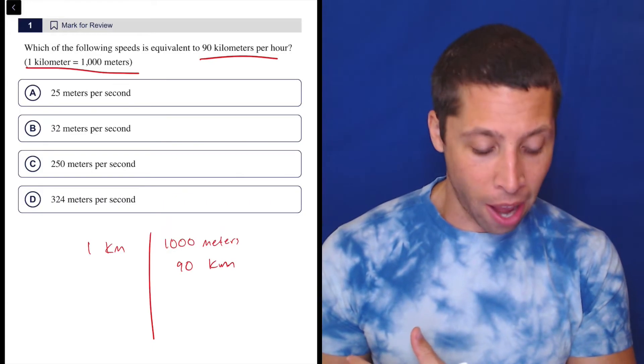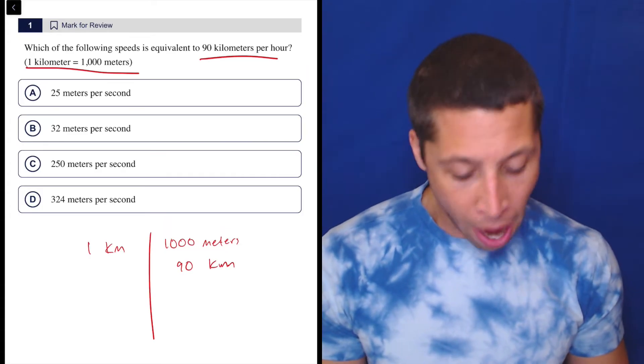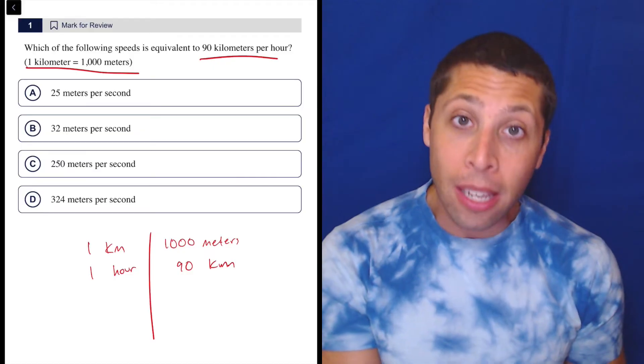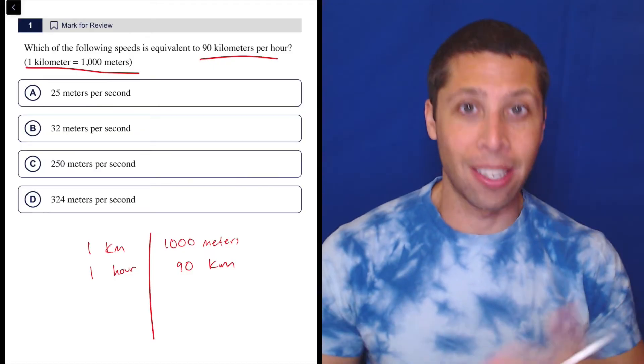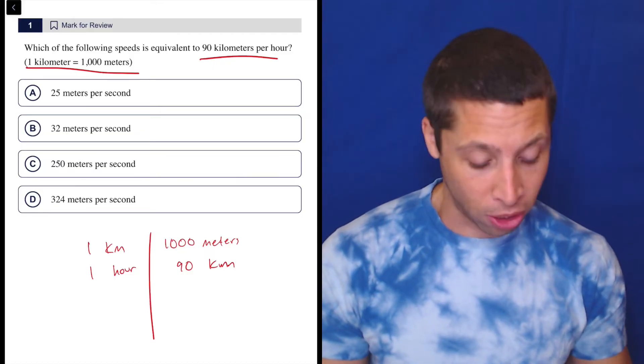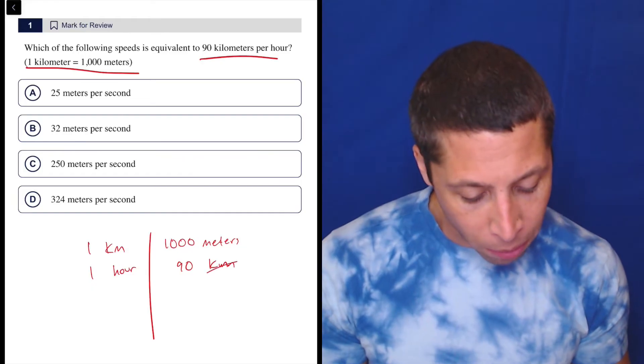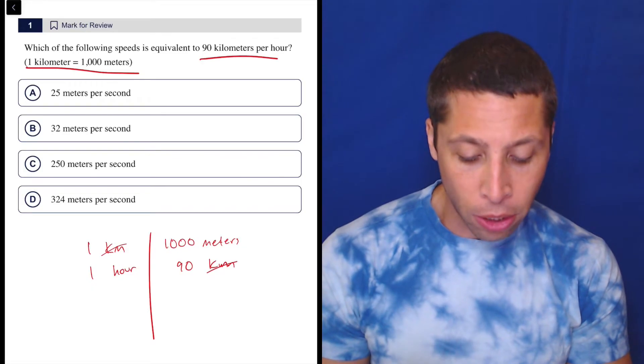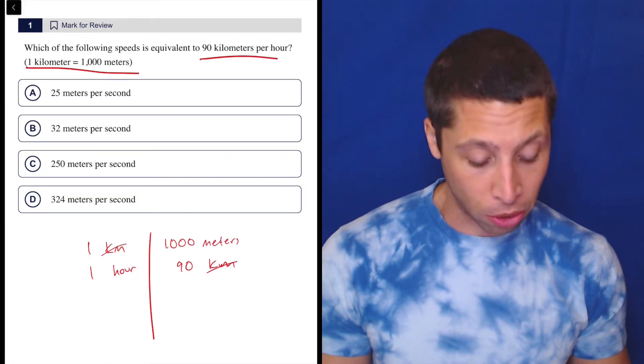Then what would go on the other side with that? Well, that would be per hour, so one hour. And this is how we turn things like speeds into rates, into these kinds of unit conversions. So 90 kilometers per hour, we get rid of kilometers, we get rid of kilometers. Now we need to get to meters per second.